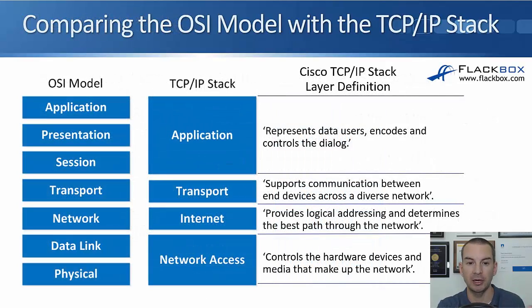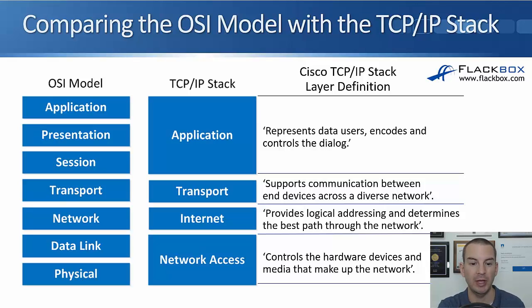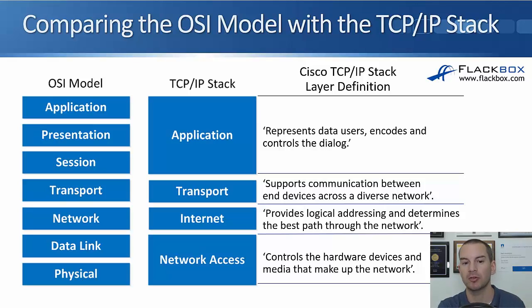On the slide, over on the left, we've got the OSI model that we covered in the last lesson — the seven layers. Remember, the easy way to remember them is: 'Please Do Not Throw Sausage Pizza Away.' So we've got Physical, Data Link, Network, Transport, Session, Presentation, and Application.